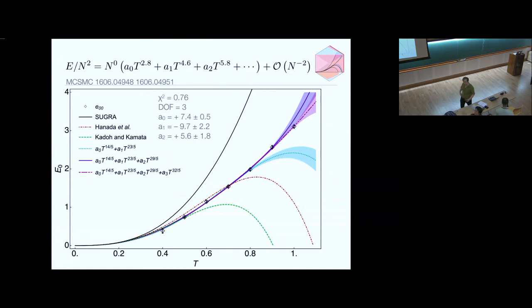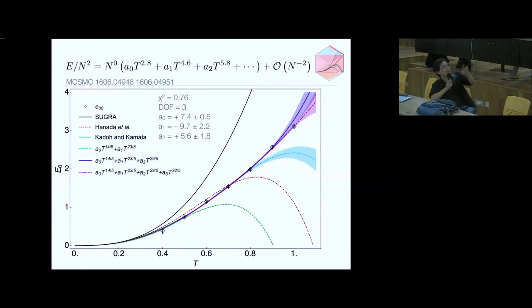The corrections should start with the alpha prime cube, then alpha prime to the fifth, and alpha prime to the sixth. A good expansion parameter around supergravity is alpha prime divided by Schwarzschild's radius squared. That number can be extracted if you look at Itzhaki-Maldacena-Sonnenschein-Yankielowicz paper. That's t to the -3/5. Essentially power counting around supergravity solution.